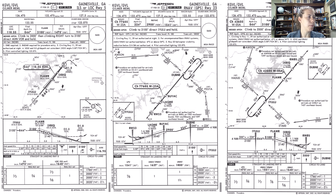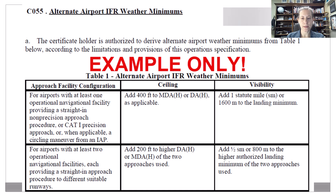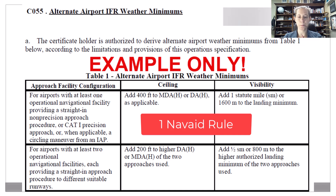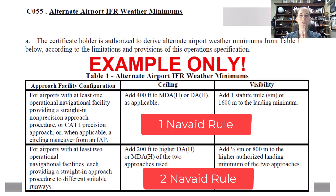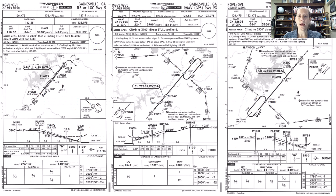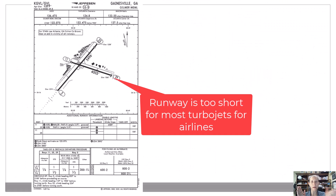I have to refresh my memory about OPSPEC C55. This says I have to use either the one NAVAID rule — the top part of the boxes — or the two NAVAID rule. The two NAVAID rule requires two different runways and two different NAVAIDs. Going back to Gainesville, Georgia, I have runway five and runway twenty-three. Runway eleven and runway twenty-nine are too short for any airplane I'd consider for commercial operations — we're pretending we have a 737 today — so we'll look at runway five and twenty-three.